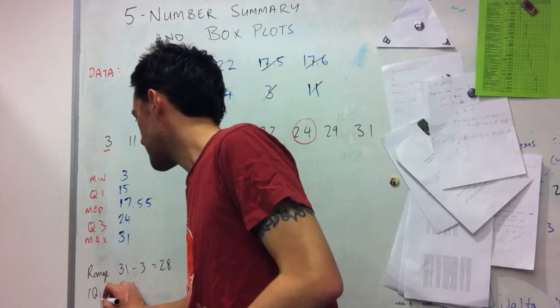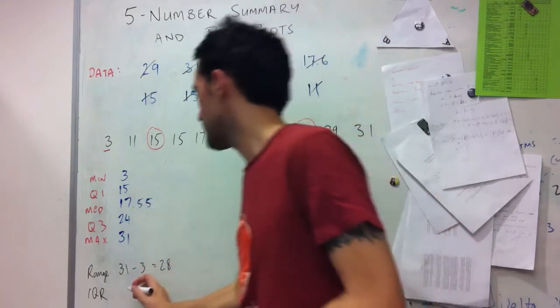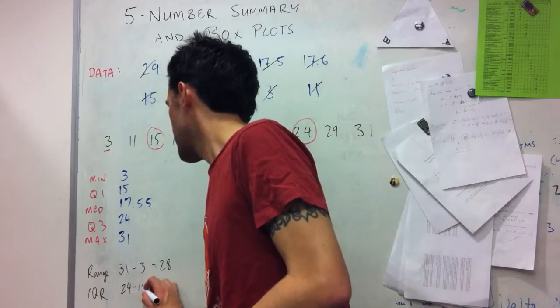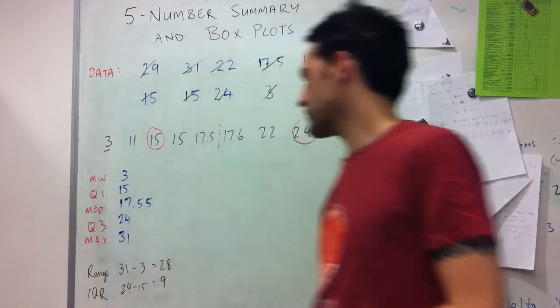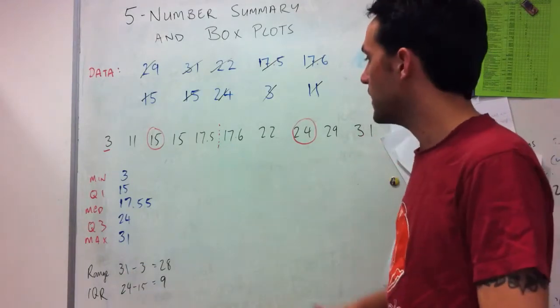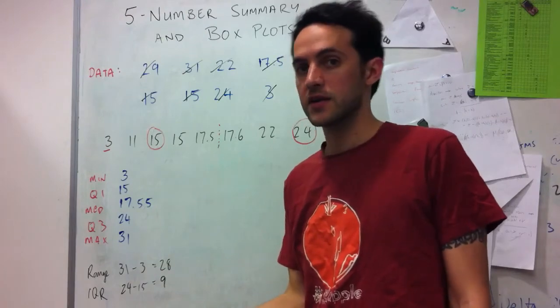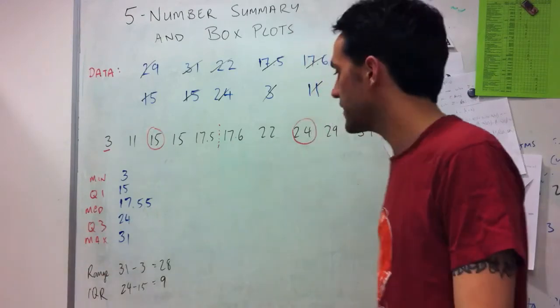And I get my interquartile range as well, which is 24 minus 15, Q3 minus Q1. And so these give me some indication of the spread of my data, whereas the median value gives me an idea of the center of my data, because 50% is below it, 50% is above it.